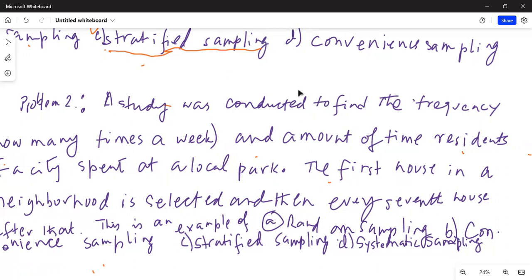Option C, stratified sampling. We did not divide houses into groups or strata. So this is not stratified sampling. So what is my correct answer? My correct answer is D, systematic sampling. Why? Because I selected the first house in the neighborhood and then every seventh house after that. So my system is the first house and then every seventh house after that. That is my system. Therefore, this is an example of systematic sampling.